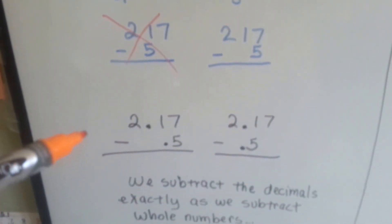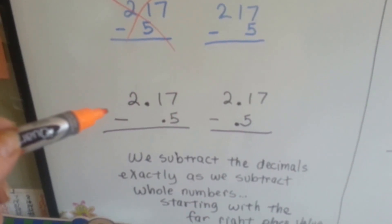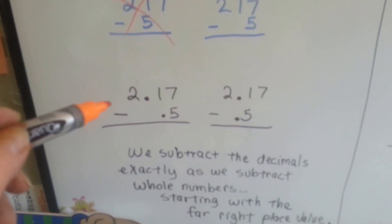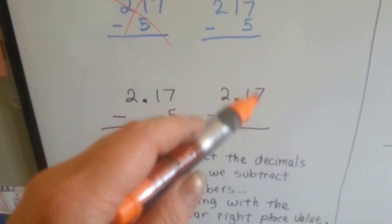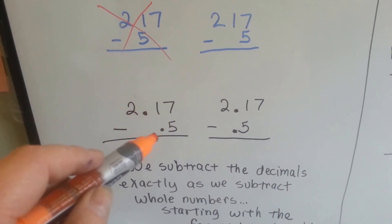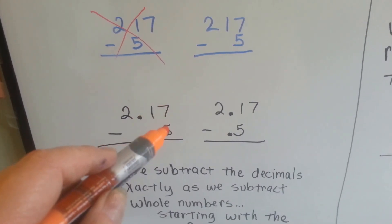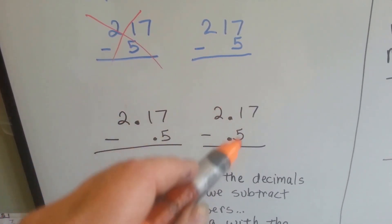Same thing with decimals. When we subtract decimals, we do it exactly as we subtract whole numbers. We start from the far right place value, but we line our decimal points up. We would never take 5 tenths away from 7 hundredths. The 5 tenths would have to go into the tenths place.